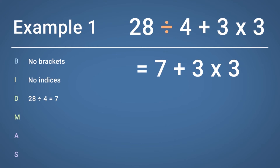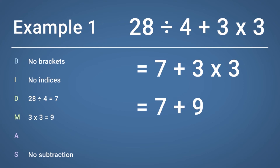Still following the BIDMAS rule, we now have to calculate the multiplication part of the sum. 3 multiplied by 3 equals 9. So we are now left with the simple sum of 7 add 9. Finally, we now calculate any addition or subtraction. There is no subtraction, so the last step is to carry out the addition. 7 add 9 equals 16. So the final answer is 16.